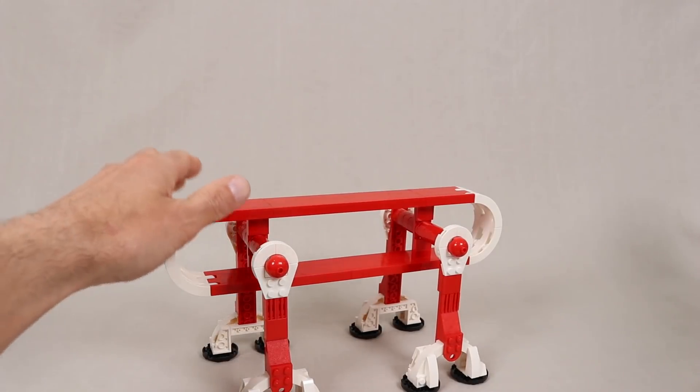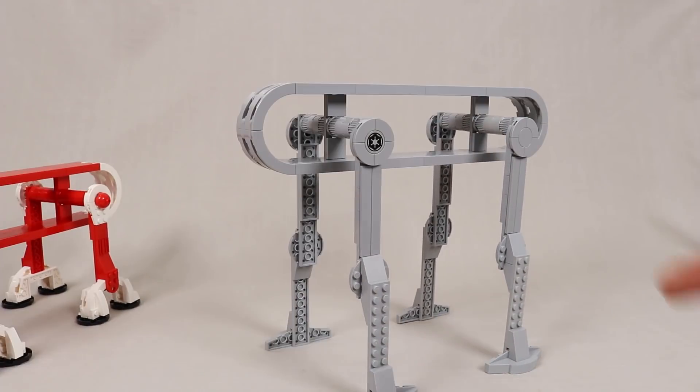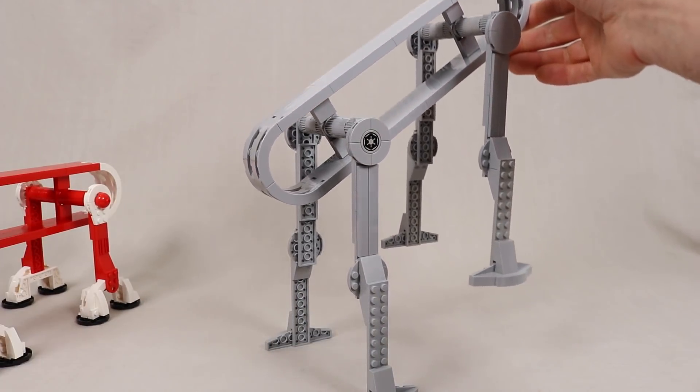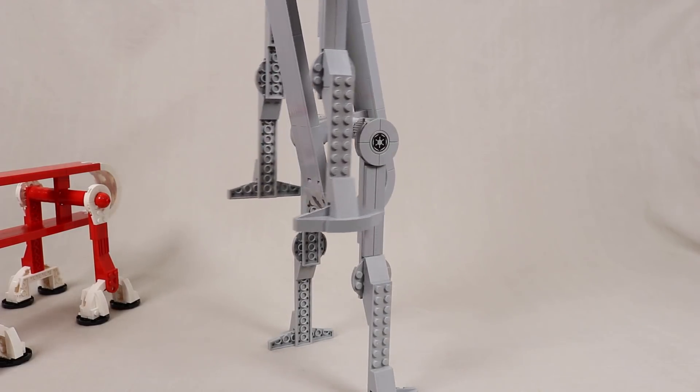We can actually overcome that limitation with a slightly more elaborate leg design like in this one. In this version the legs flare out by a few plates so that as it flips over, the lower section of the trailing legs can pass outside of the upper section of the leading legs.